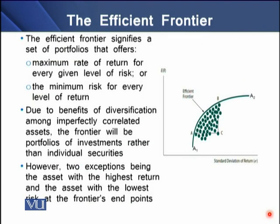How does the efficient frontier work? This efficient frontier signifies a set of portfolios that offers two factors to the investor: first, the maximum rate of return for every given level of risk, and second, the minimum risk for every level of return. At the efficient frontier, the investor can choose any security offering maximum return for a given risk, or minimum riskiness for every level of return.